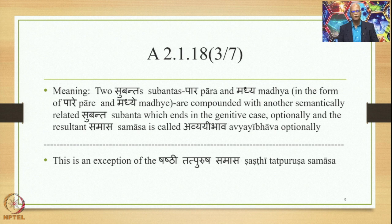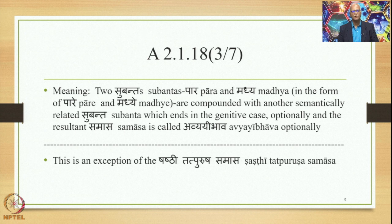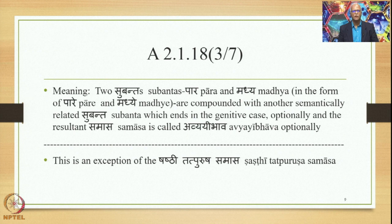Having put all these words together, we get the following meaning of the sutra: two subantas — namely Para and Madhya in the form of Pare and Madhye — are compounded with another semantically related subanta which ends in the genitive case, optionally. The resultant Samasa is called Avyayibhava, optionally.